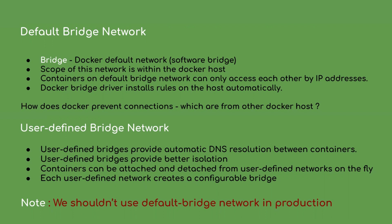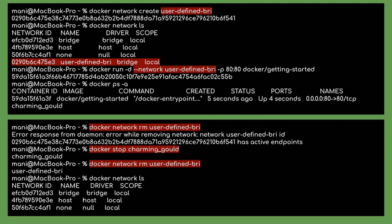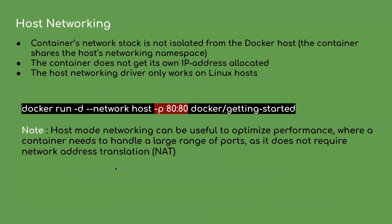Instead, we can go for a user-defined bridge network in production. User-defined bridges provide automatic DNS resolution between containers, so a container can reach another container using its name. It provides better isolation than the default bridge, and containers can be attached and detached from user-defined networks on the fly without bringing down the container. Each user-defined network creates a configurable bridge, and the container service name is always constant even though the virtual IP address may change. We can attach a configured network to a container using the docker run command with the network option, and we can remove a configured network only if no running containers exist with that same user-defined network.